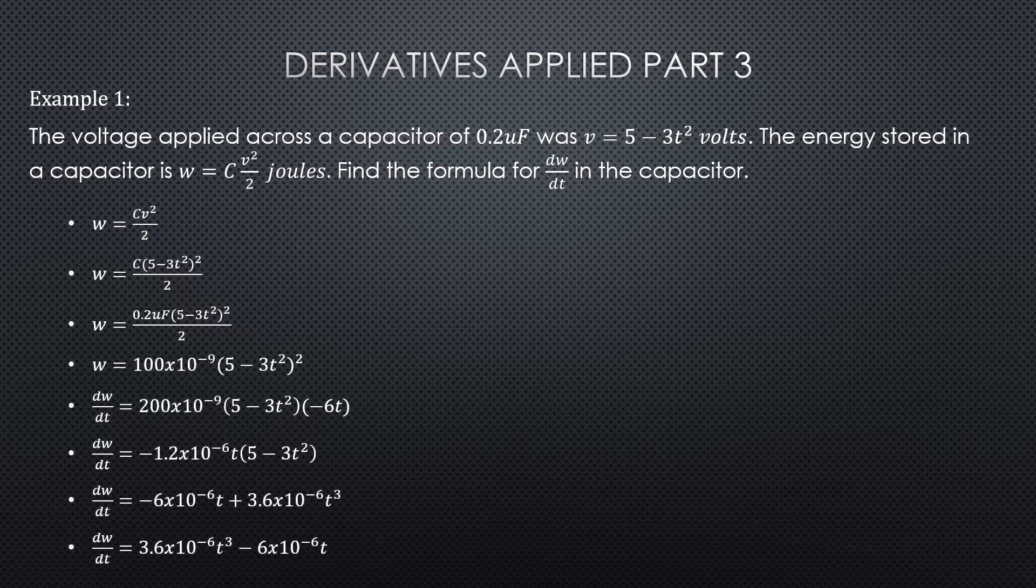And that's that next bullet line there, dW/dt. Now all the rest of it is just the algebra. We're cleaning up the dW/dt for our final answer of 3.6 times 10⁻⁶ t³ minus 6 times 10⁻⁶ t.